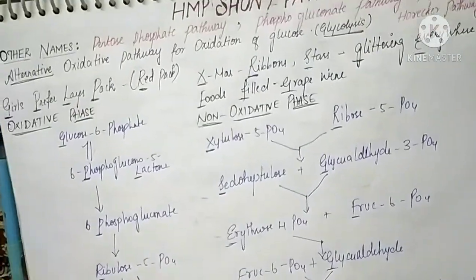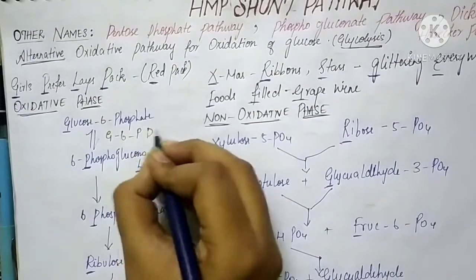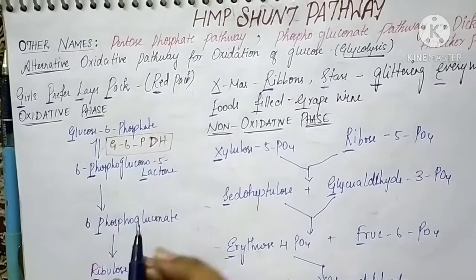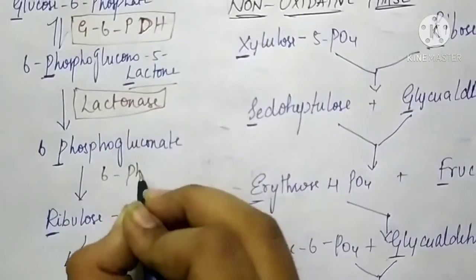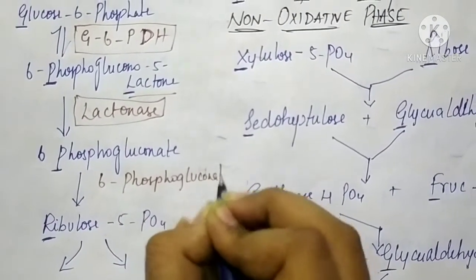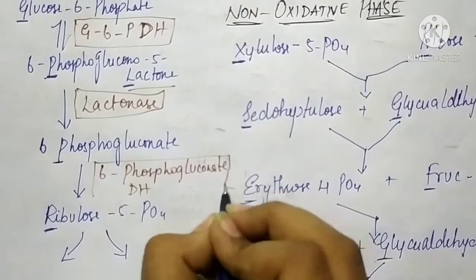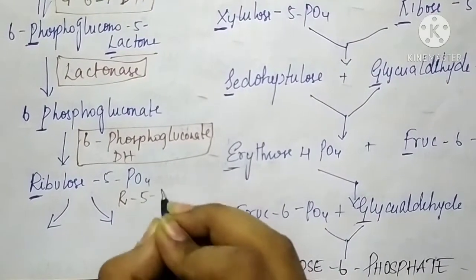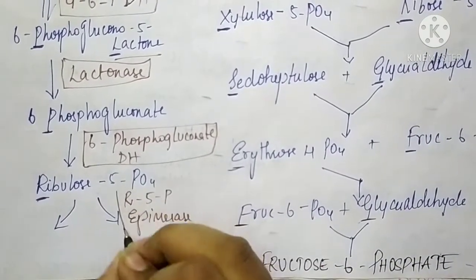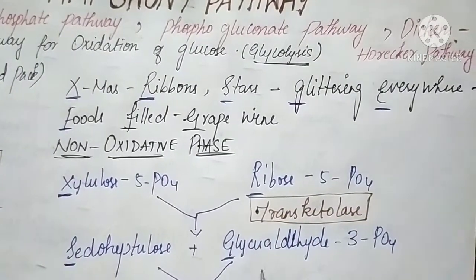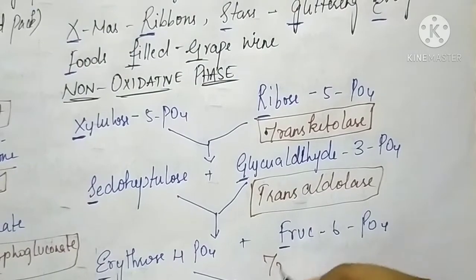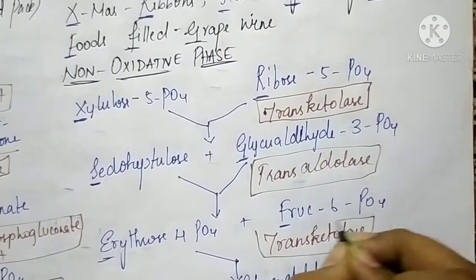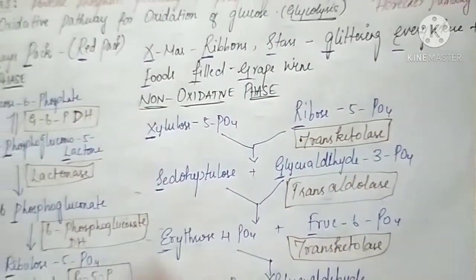Now the enzymes: Glucose-6-phosphate dehydrogenase acts on Glucose-6-phosphate. Lactonase converts 6-phosphogluconolactone. 6-phosphogluconate dehydrogenase acts next, followed by Ribulose-5-phosphate isomerase. In the non-oxidative phase, Transketolase and Transaldolase are the key enzymes, with Transketolase acting twice.